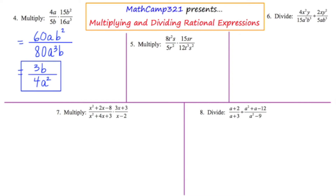Let's move to number five. We're told to multiply 8t squared s over 5r squared times 15sr over 12t cubed s squared. This time I'm going to implement cross canceling. I could do it exactly the way I did number four, but just to show a different alternative, I'm going to cross cancel. A lot of students like cross canceling, but there's one drawback — things get messy real fast, so you've got to be really neat.